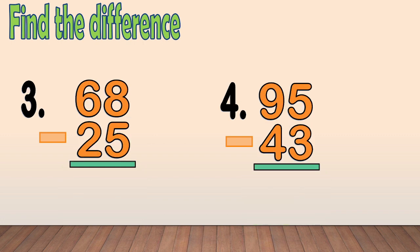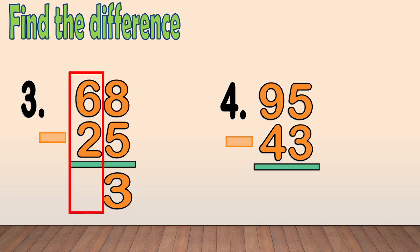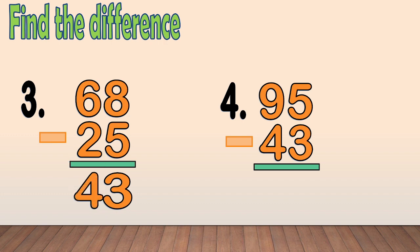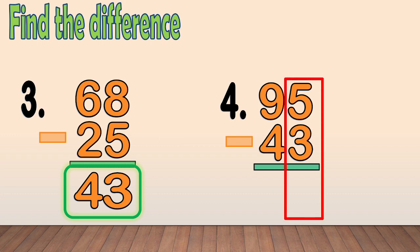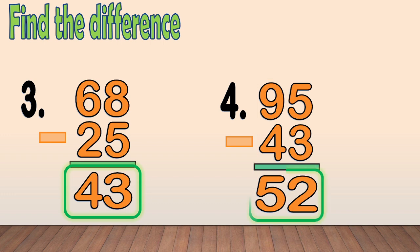Number 3: 68 minus 25. First, subtract the ones column. 8 minus 5 equals 3. Next, subtract the tens column. 6 minus 2 equals 4. Our final answer is 43.